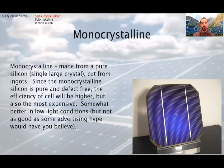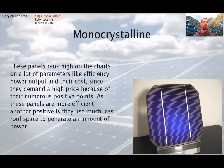These panels rank high on the charts on a lot of parameters like efficiency, power output and their cost, since they demand a high price because of their number of positive points. As these panels are more efficient, another positive is they use much less room space to generate an amount of power. For approximately one kilowatt power output, solar panel of 6 to 9 square meter area is required.